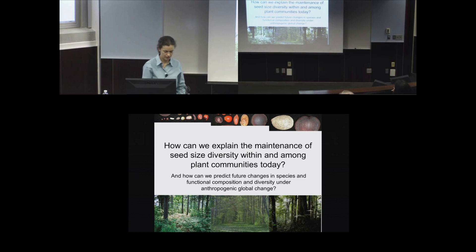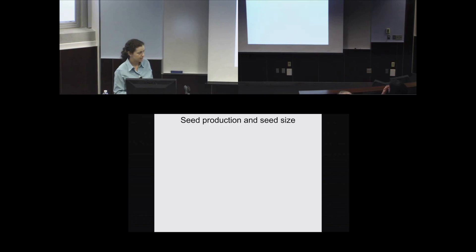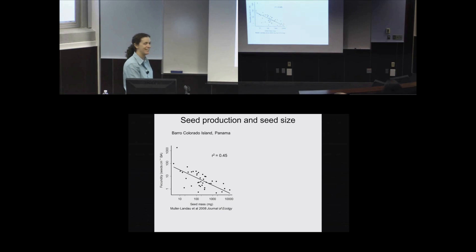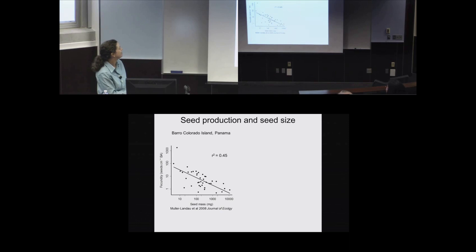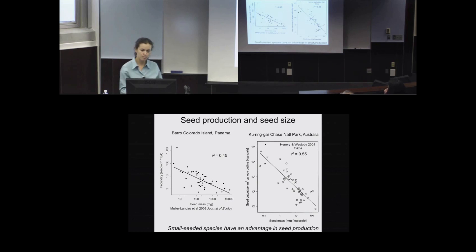Past explanations for variation in seed size basically fall into two categories. The first is what I would call fecundity balances survival. It rests on empirical observations: seed mass and fecundity trade off negatively across species — you can make many small seeds or a few big seeds. This negative relationship is found in pretty much any community. So small seeded species have a clear advantage in seed production.